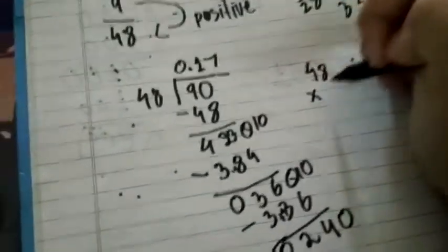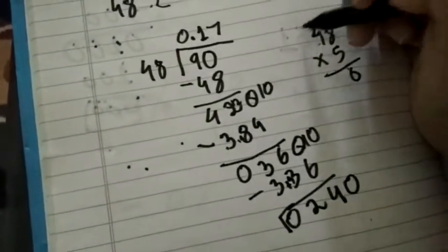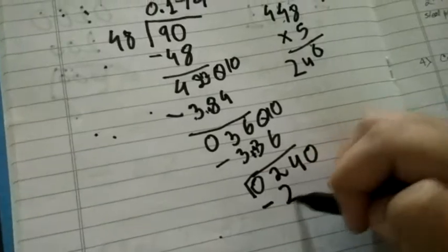48 into 5 is equal to 40. All right, 4 times 5 is 23. Yes, I got it. Here I've predicted it well. Now 240 minus 240.